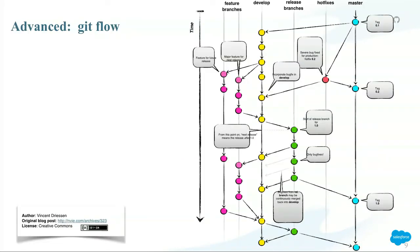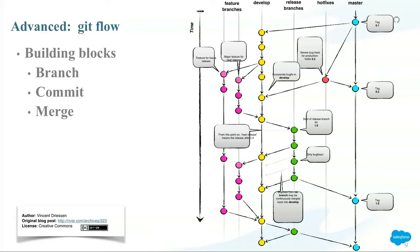Let's go to a bit of an advanced example — something called Git Flow. This diagram was taken from a blog post by Vincent Driessen, where he very convincingly explains how you can use the basic building blocks of branch, commit, and merge to build sophisticated workflows using just vanilla Git. In here, he has a master branch, feature branches, as well as branches for development, release, and hot fixes. There's a link here you could follow up on — it's a great article.